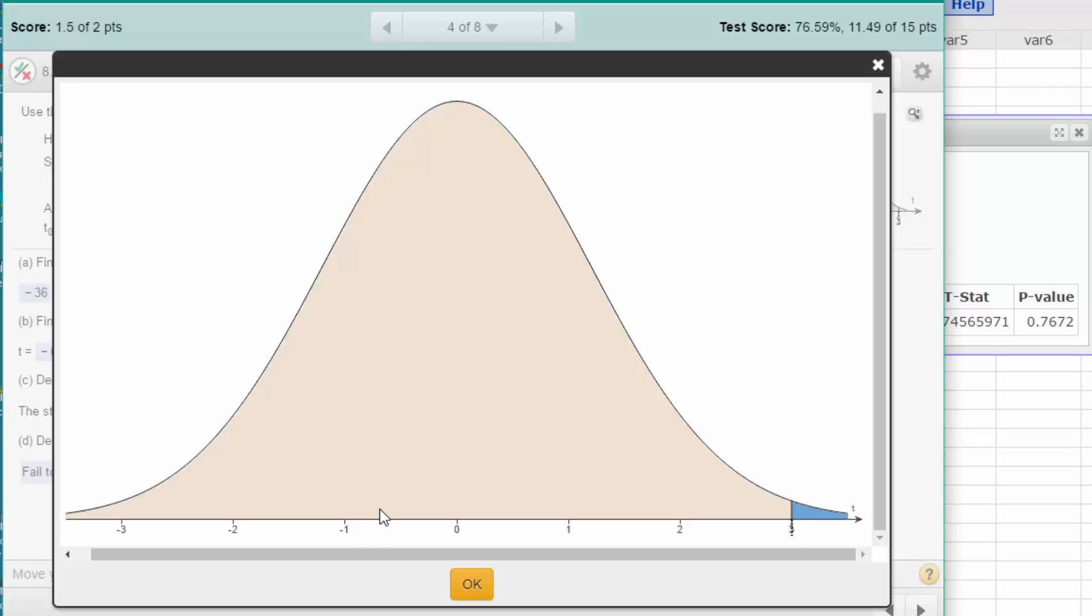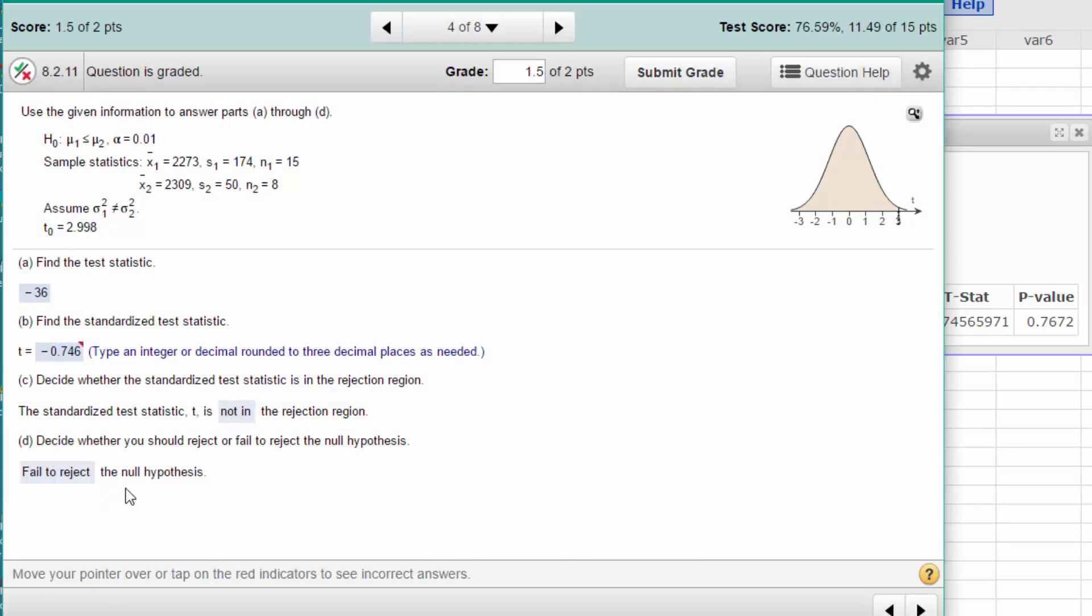Our rejection region is that 2.998, that blue area there. We're over here at minus 0.746, so we're not in the rejection region. That agrees with our probability of 0.762, very large, which says we again fail to reject the null hypothesis. That's the answer: the test statistic is not in the rejection region, and therefore we fail to reject.